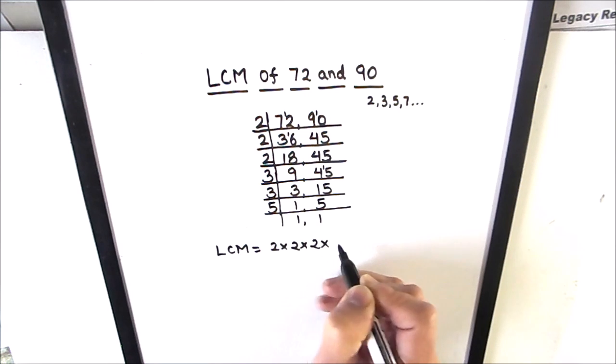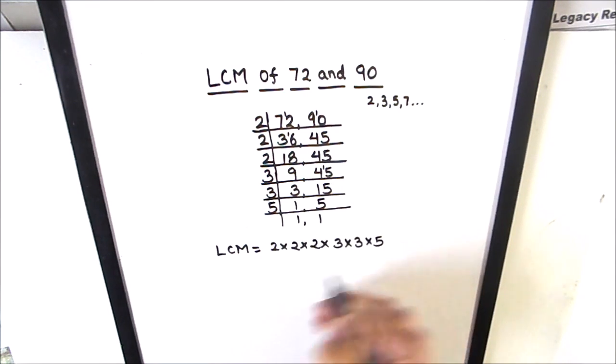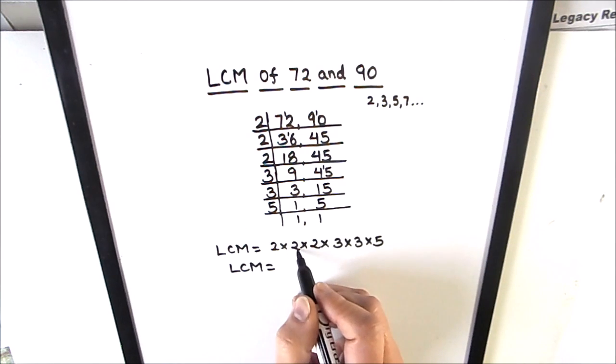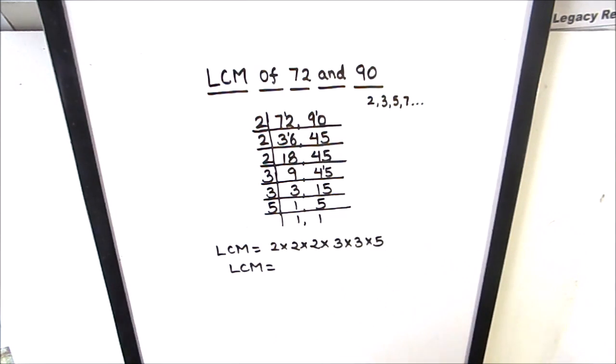So 2 times 2 times 2 times 3 times 3 times 5 is the LCM of the two numbers. The LCM is 2 times 2 is 4, 4 times 2 is 8, 8 times 3 is 24, and 24 times 15 is 360. So the LCM of the two numbers is 360.